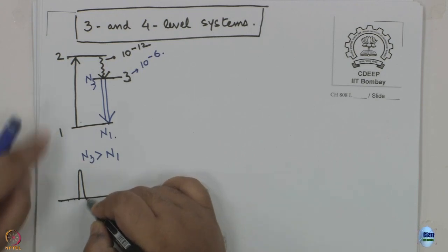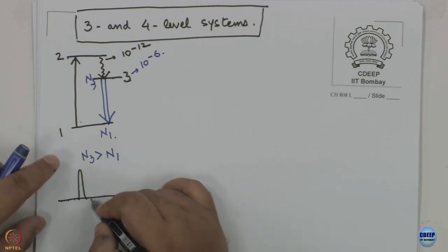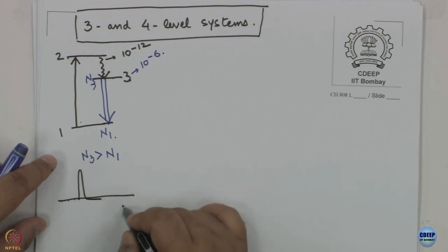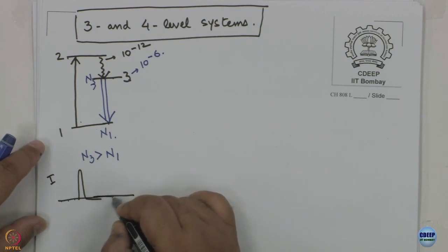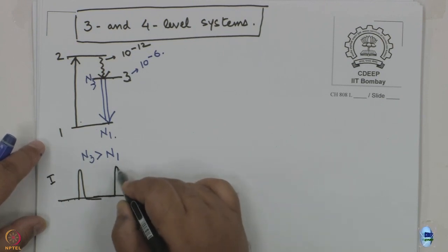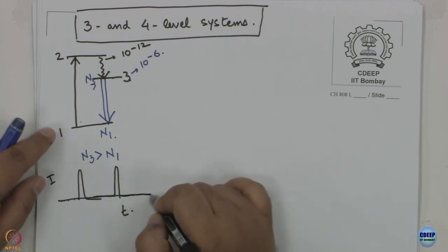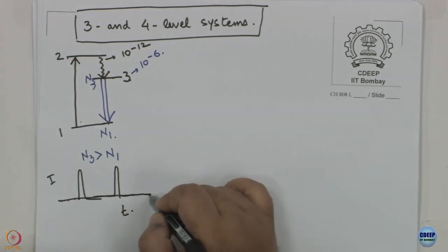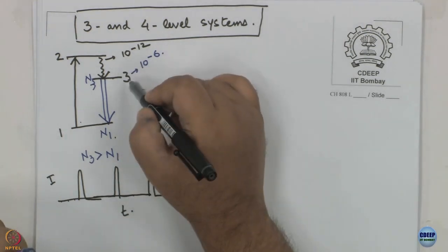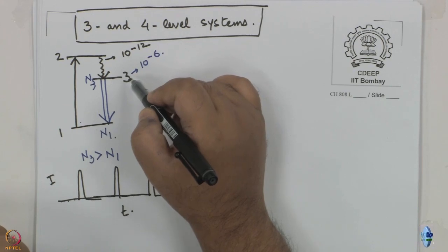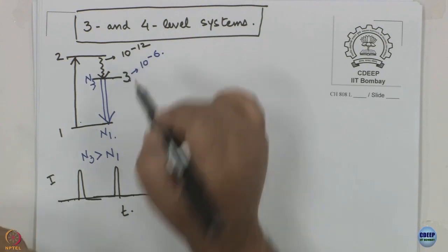So the output you get will be a burst of light. Then again, if the 1-to-2 radiation is on, population of N3 will keep building up and the laser will be silent. Then after the required amount of time, once again there will be a burst of light. This will go on provided you keep the pumping on.